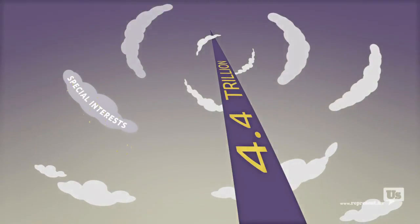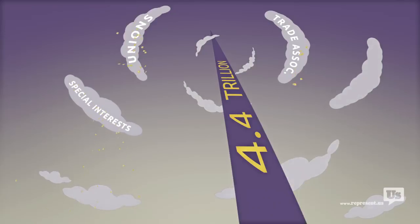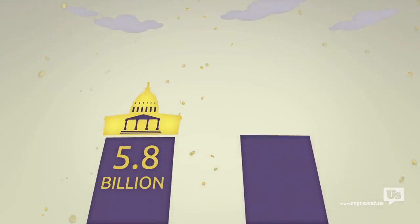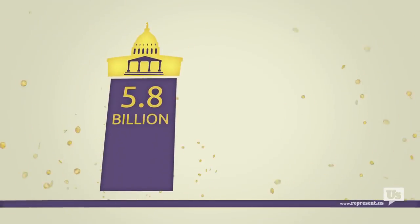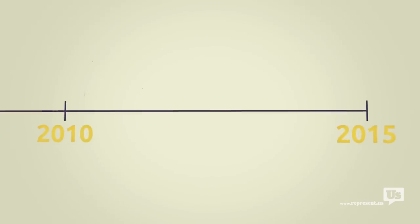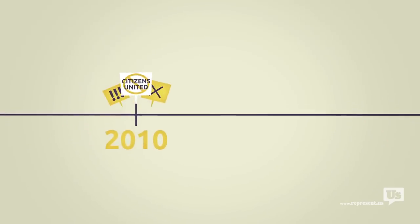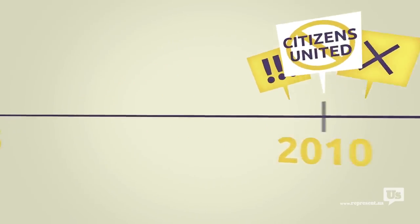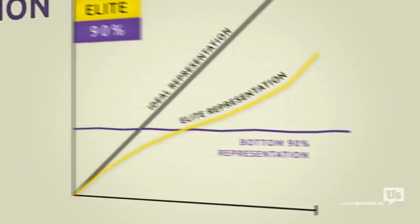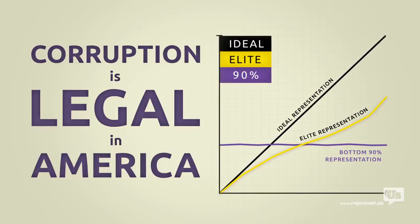Never mind every other special interest, every union, every trade association, and every billionaire. Every single one of them can use their money to buy political influence. You know, there's this idea out there that this only became a problem after the Supreme Court's Citizens United decision in 2010. But the data goes back almost 40 years, and the results are clear. Corruption is legal in America.